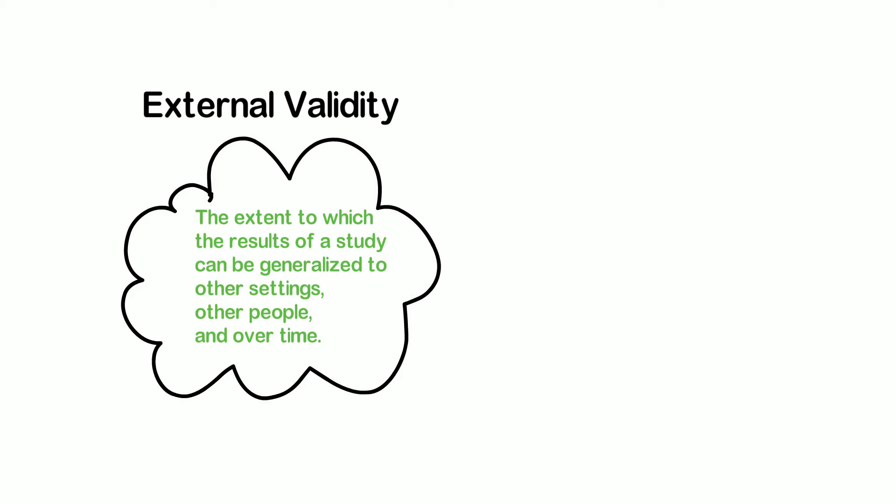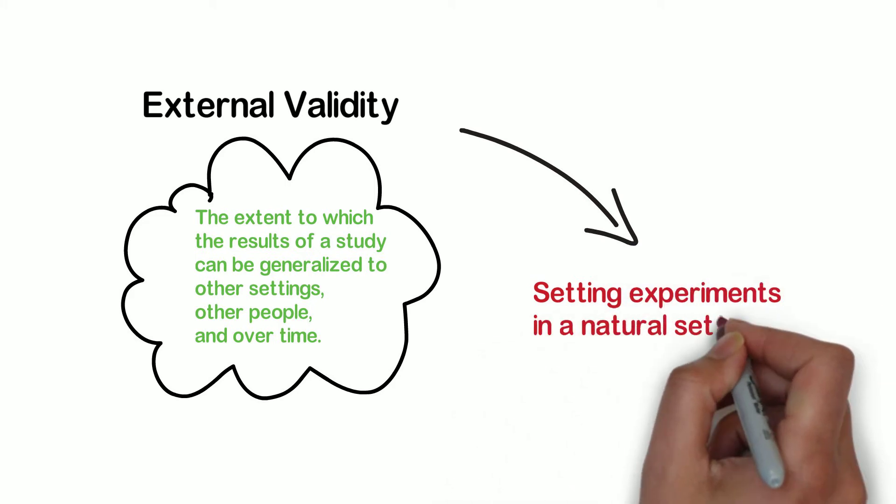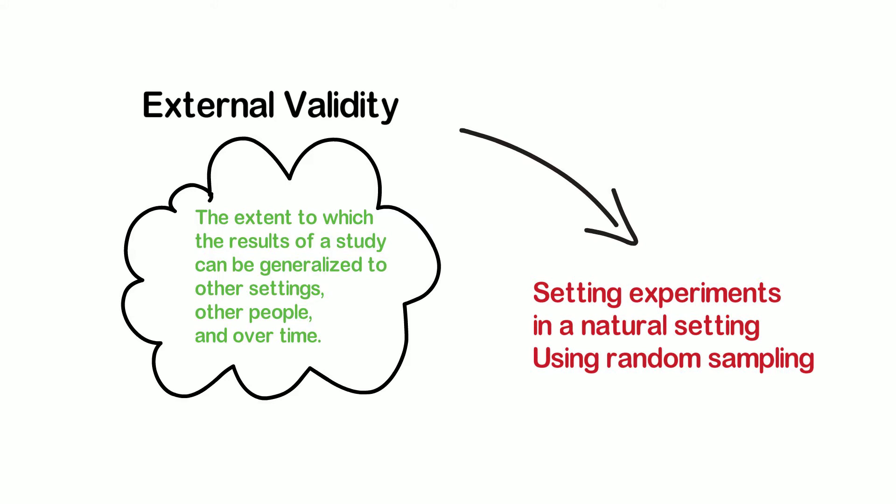Ways to improve external validity include setting experiments in a more natural setting and using random sampling, so that the findings of your study can be generalized to other settings and people. As a researcher, you always want to increase both the internal validity and external validity of your research findings.